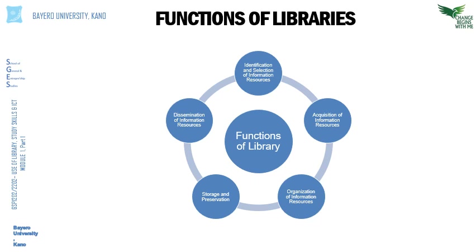Finally, among the functions performed by libraries is the dissemination of information resources and services. Libraries make their services available because they are not just museums or storehouses — they are expected to disseminate services to their numerous users through easy access to resources. Libraries provide information services such as Selective Dissemination of Information, current awareness services to inform users of new arrivals, circulation services which allow users to borrow resources, and reference services where users can ask questions such as: how do I consult my assignment, how do I structure it, which resources can I best use?